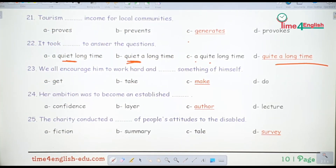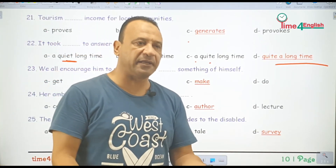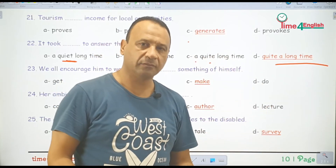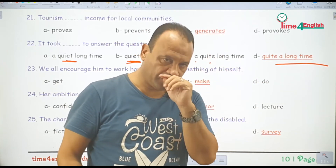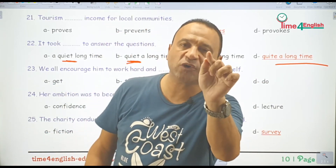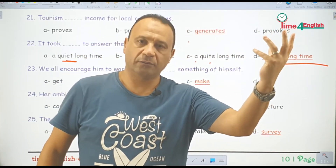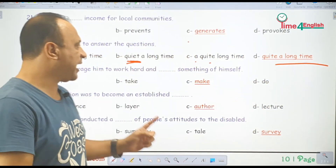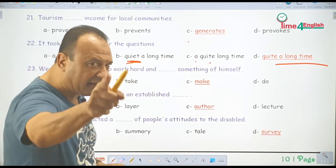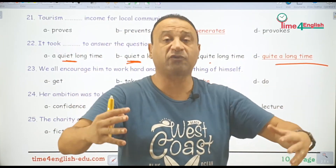We all encourage him to work hard — إحنا دائماً بنشجعه كلنا إنه يكتهد. Make something of himself يعني يحاول ينجح، يعمل من نفسه حاجة كويسة. Try to make something of yourself يعني حاول تكون حاجة كويسة في المستقبل — a successful person. يبقى try to make something of yourself يعني try to be a successful person.